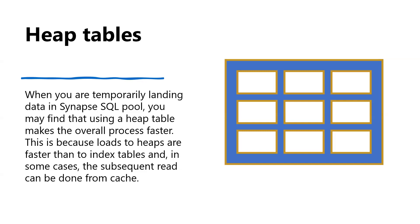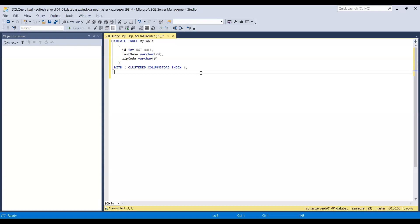Clustered column store tables begin to achieve optimal compression once there are more than 60 million rows. For small lookup tables, to create a heap table we simply specify HEAP in the WITH clause: CREATE TABLE (id, last_name, zip_code) WITH (HEAP). For clustered column store index, use WITH (CLUSTERED COLUMNSTORE INDEX).